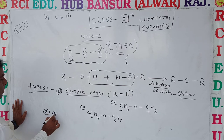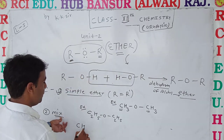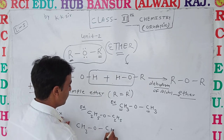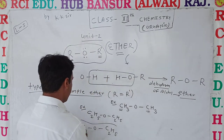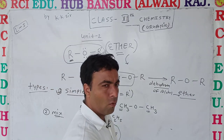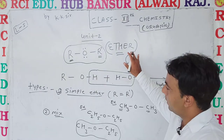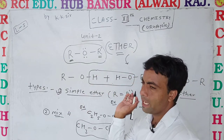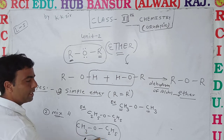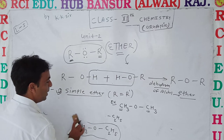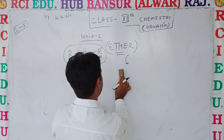The next type is mixed ether. Here, if one R group is CH3 and the second is C2H5, then that is called mixed ether. That means different alkyl groups are used in the formula. The formation of ether from different alkyl groups is called mixed ether. It is called ethyl-methyl ether.